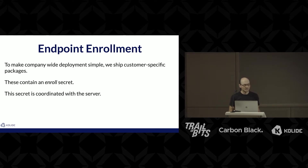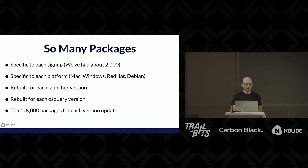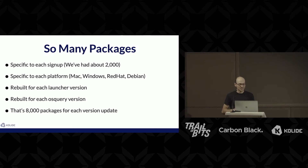To make deployment simple, we ship customer-specific packages. The key to these is that they contain an enrollment secret, and that secret is coordinated with the server. This requires a lot of packages. We've had about 2,000 sign-ups so far, and we make packages for each major platform — four major platforms. We build those for every Launcher version and for every OS Query version that we ship. So every time there's a version upgrade, we build like 8,000 packages. There are some shortcuts, but still a lot of packages to build.